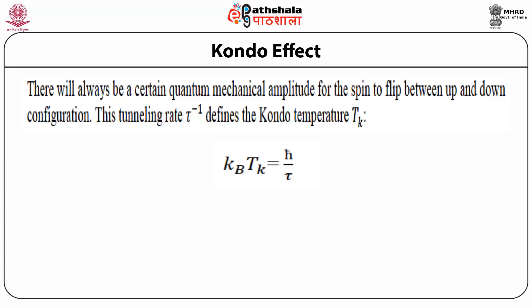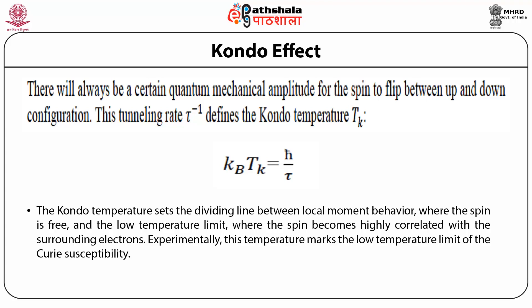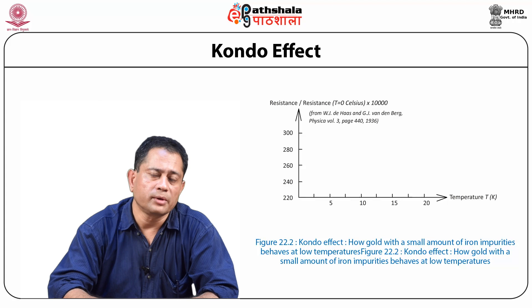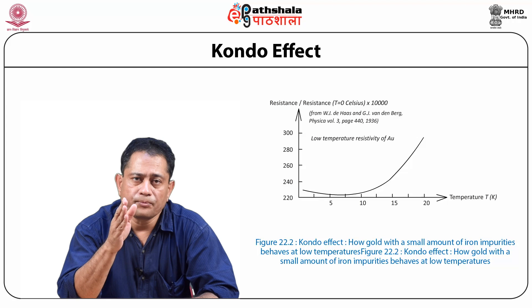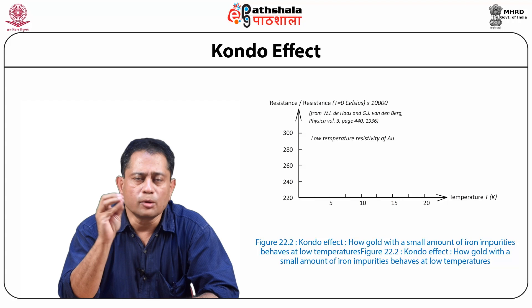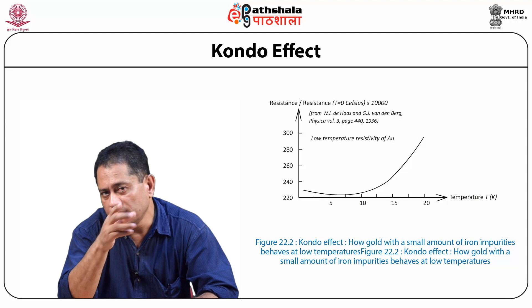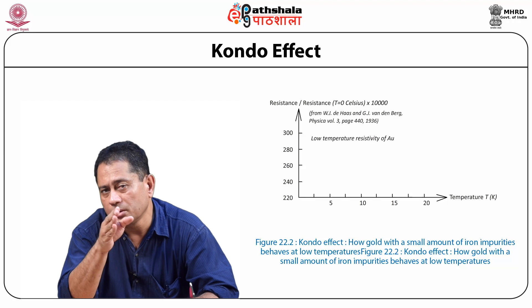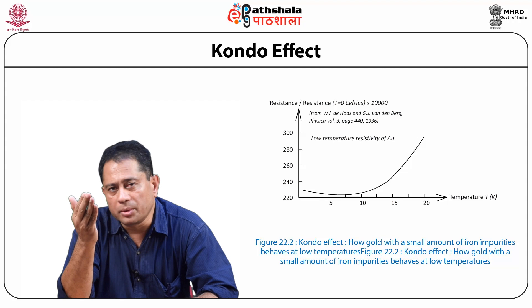This tunneling rate 1/τ defines the Kondo temperature T_K. The Boltzmann constant k_B multiplied by the Kondo temperature T_K equals ℏ divided by τ. The Kondo temperature sets the dividing line between local moment behavior — where the spin is free — and the low temperature limit where the spin becomes highly correlated with the surrounding electrons. Experimentally, this temperature marks the low-temperature limit of the Curie susceptibility. This figure shows the resistivity versus temperature for gold very slightly doped with iron; because of these iron impurities, the resistance shows a minimum at a certain temperature — a characteristic feature of the Kondo effect.